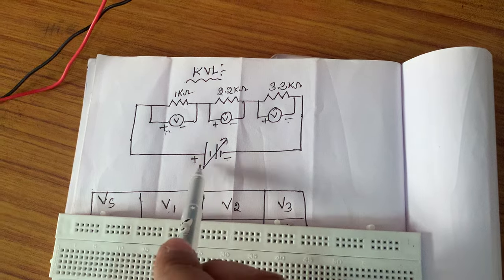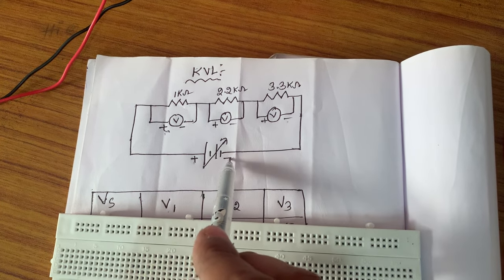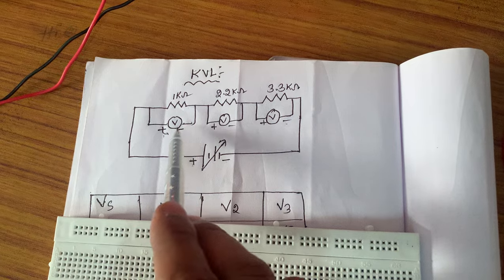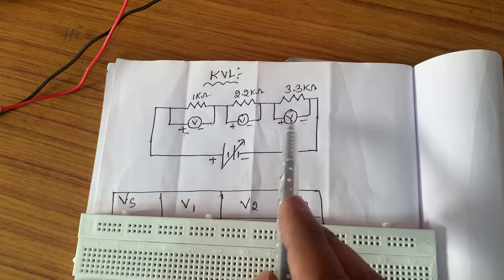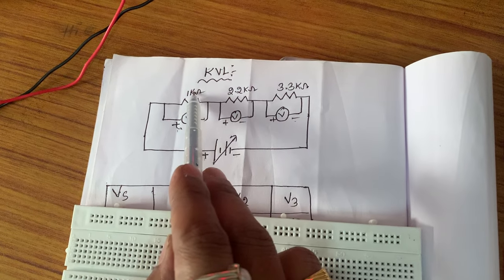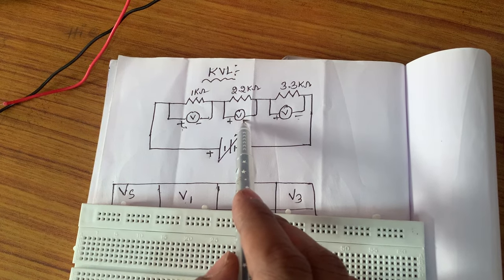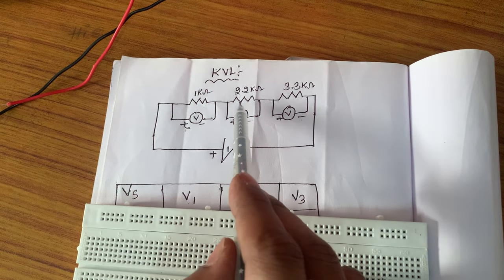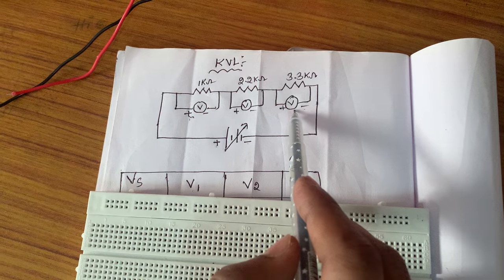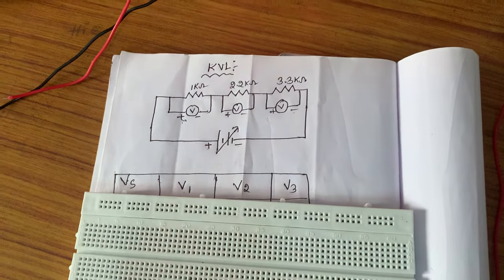This is the RPS supply voltage. We have the positive terminal and the minus terminal. We are using three voltmeters here: V1, V2, and V3. V1 is used to measure the voltage across the 1 kOhm resistor, V2 is used to measure the voltage across the 2.2 kOhm resistor, and V3 is used to measure the voltage across the 3.3 kOhm resistor.